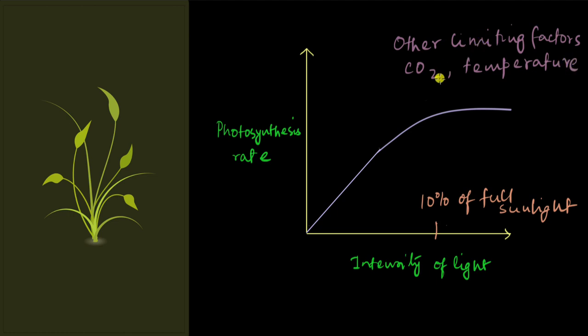So what do I mean by limiting factors? That means that they are limiting the amount of photosynthesis that can happen. Why are they limiting it? Because they themselves are not enough. For example, the temperature may be too low or too high, or the carbon dioxide concentrations may be really, really low. So no matter how much you increase the amount of light, the photosynthesis rate won't increase. But as long as the intensity of sunlight is low, the photosynthesis rate does increase linearly.